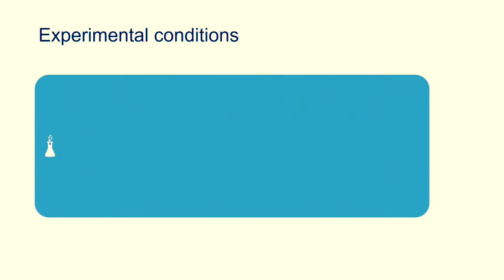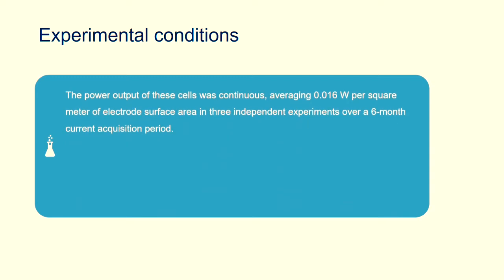Next are the experimental conditions. The power output of these cells was continuous, averaging 0.016 W per square meter of electrode surface area in three independent experiments over a six-month current acquisition period.